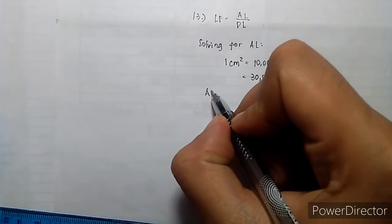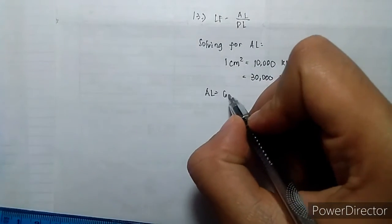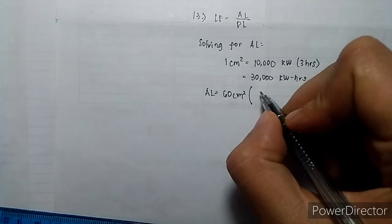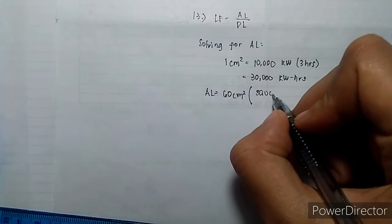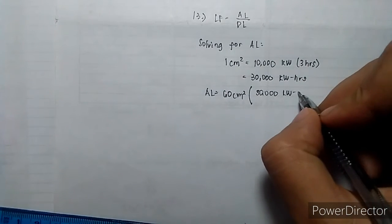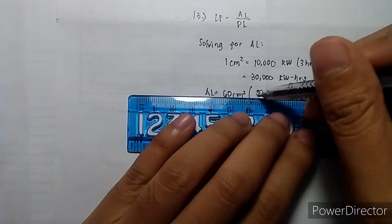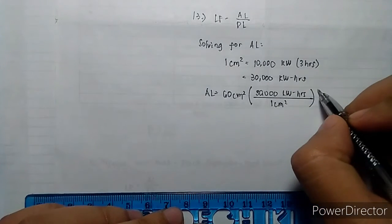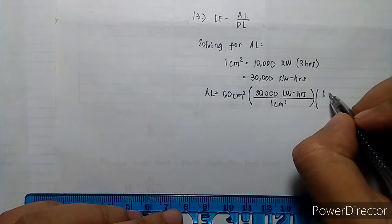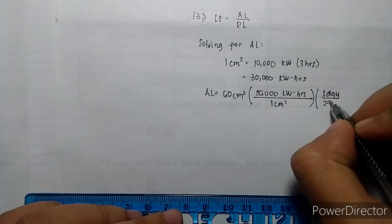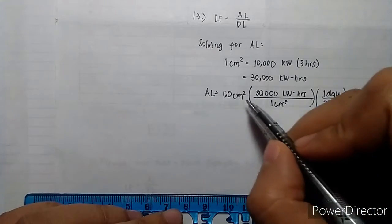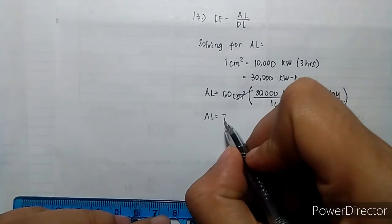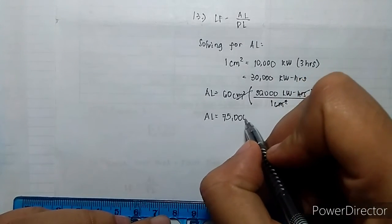The average load is equal to 60 square centimeters times 30,000 kilowatt hours over 1 cm square, times 1 day over 24 hours. The average load is equal to 75,000 kilowatts.